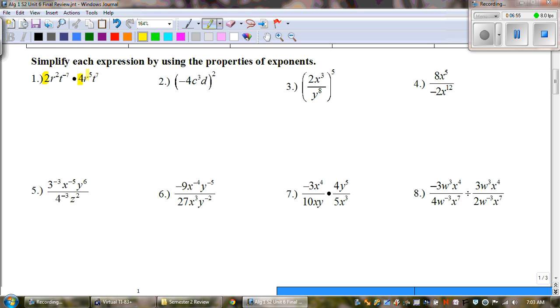So we have 2 times 4. 2 times 4 is 8. Last time I checked. Now we have r squared and r to the 5th so we add those and get r to the 7th, and then I have t to the negative 7th and t to the positive 7th and when we combine those those cancel. So our final answer is 8r to the 7th.